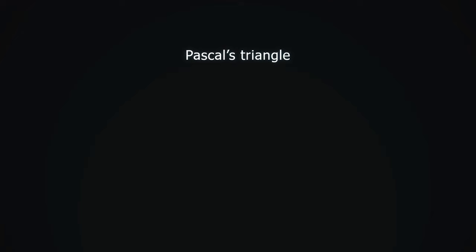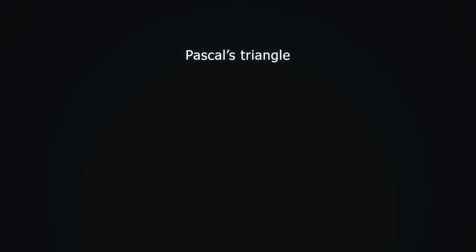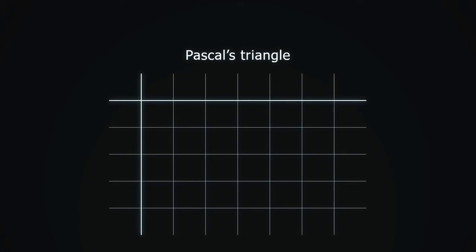Using Pascal's identity and what we know so far about binomial coefficients, we can create a table. Let the rows correspond to the number n and the columns to the number k. We count from 0 so we can see all binomial coefficients. It may seem a bit strange that we are placing k above n, but it is clearer this way, as we shall soon see.